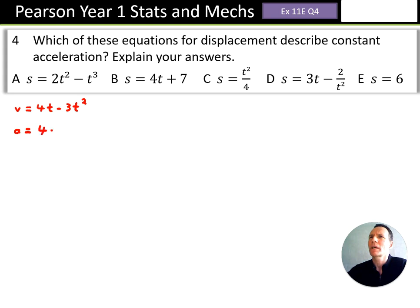Differentiating that to get acceleration, we get acceleration is 4 minus 6t. At this point, the acceleration is still a function of t, a function of time, so not constant.